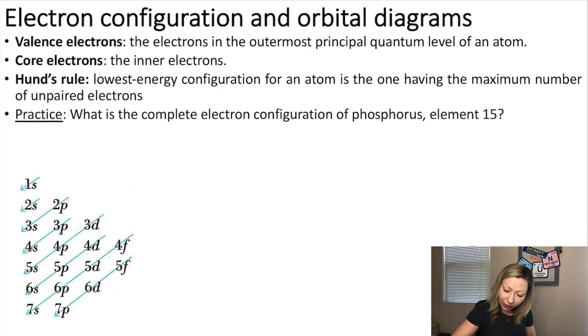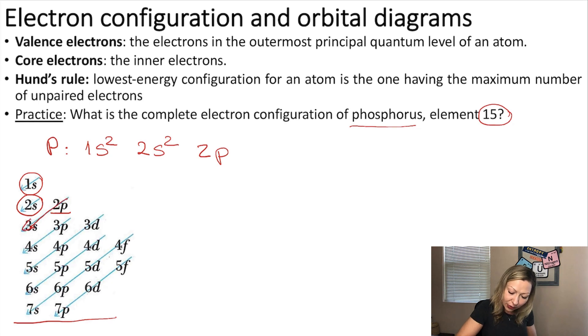Let's write the complete electron configuration of phosphorus, which is element 15. So I know that I have to place 15 electrons on the electron orbitals. This is phosphorus, it has a symbol of P. I start the lowest energy orbital, the 1s orbital. How many electrons can I place on an s orbital? Two. So 1s². Then I go to the 2s orbital, 2s², again I can place two electrons. After that, I'm going to go to 2p orbital, and then from 2p to 3s.